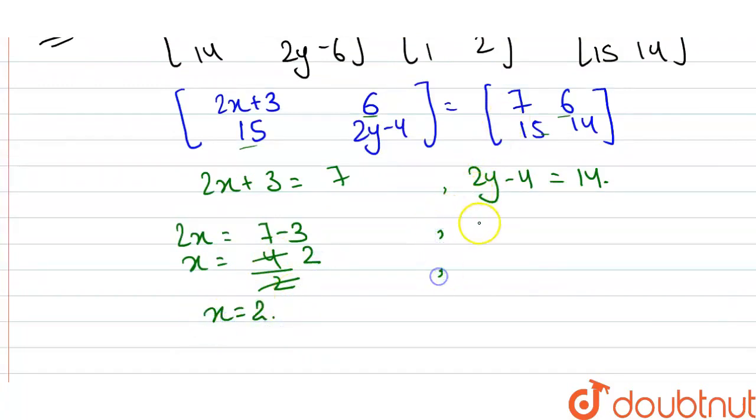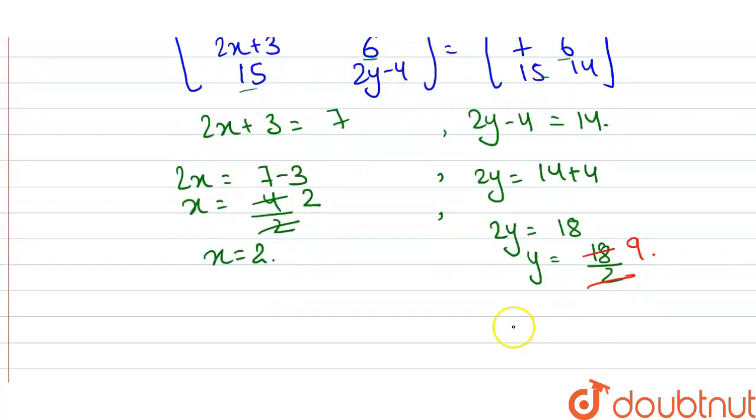Similarly, here, 2y equals 14 plus 4, taking this negative 4 to the right hand side. We get 2y equals 18, and the value of y equals 18 divided by 2. This 2 divides 18 nine times, so the value of y equals 9.